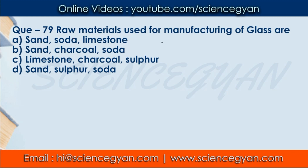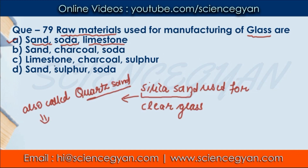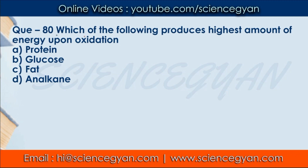Question number 79: Raw materials used for manufacturing of glass — which raw materials are used for glass manufacturing? Four options are given. The correct answer is A — sand, soda, and limestone are used for glass formation. For making clear glass, the sand used is silica sand, also known as quartz sand. So the correct answer is A.